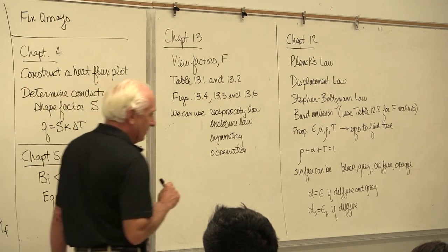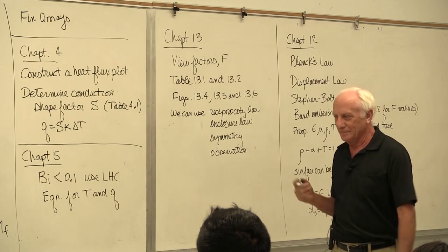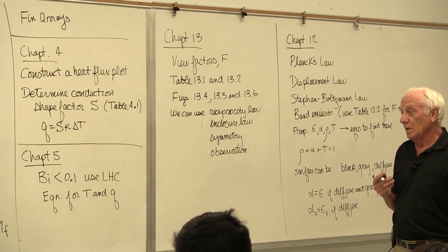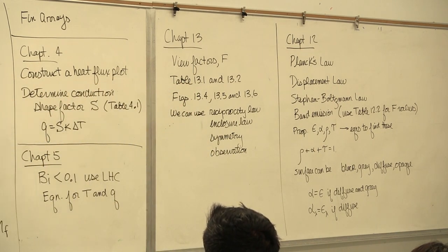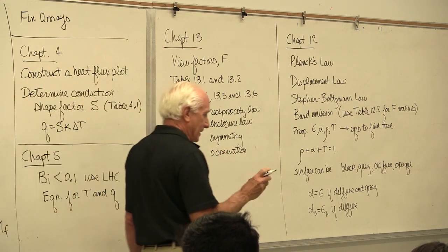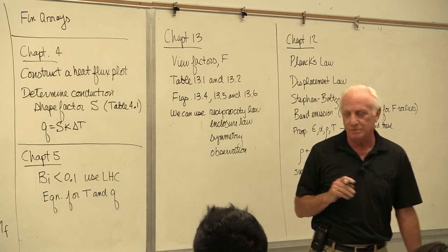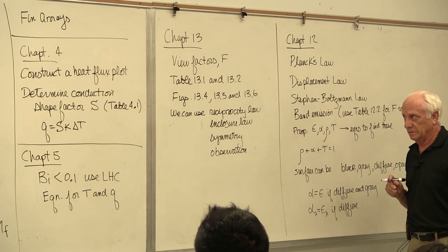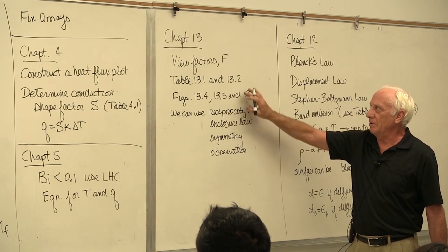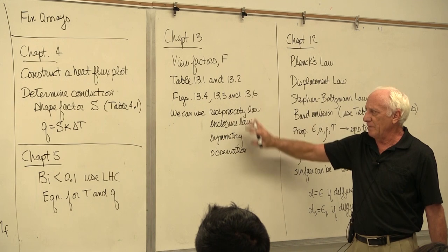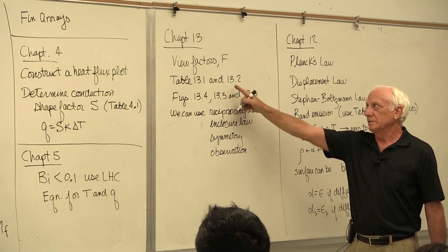Reciprocity law: A1 F1,2 equal A2 F2,1. Enclosure law: F1,1 plus F1,2 plus F1,3 equal 1. If the surface is plane, F1,1 is 0. If the surface is convex, F1,1 is 0. If the surface is concave, F1,1 is not 0. So, is the surface plane, convex, or concave? Important to know. Big hints, major hints. We use all this stuff here to get all these view factors. This plus this. Sometimes you don't need these guys up here. We can do it all by observation. But if you get stuck, look up here.